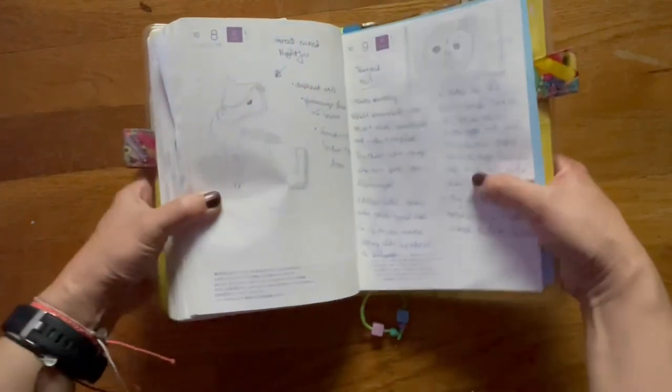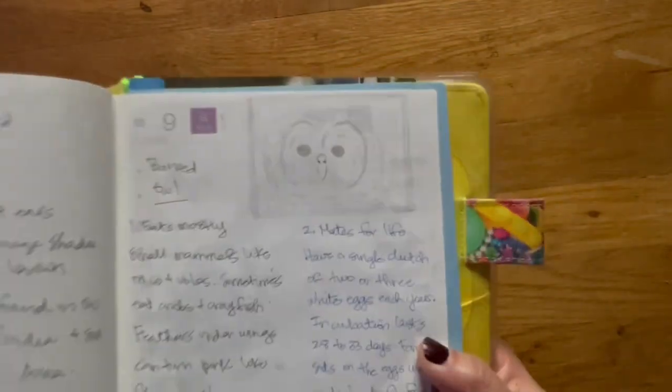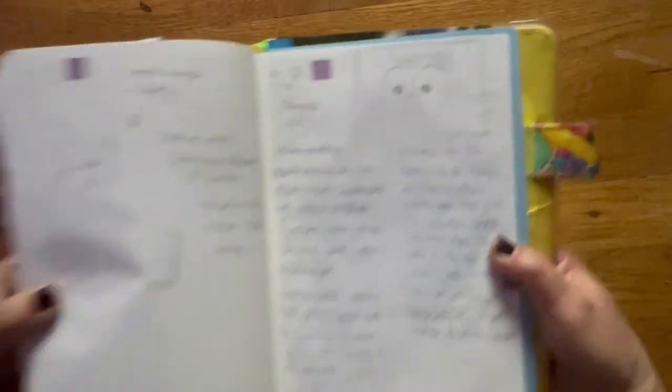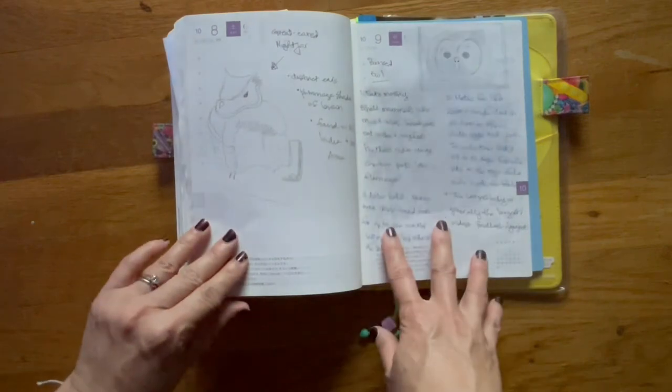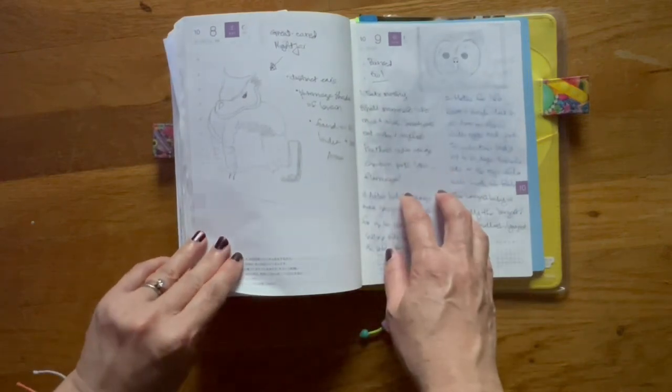Over here is a barred owl. And I really like the pencil sketch. I don't know if you can see it. Again, same thing. Information about it down here.